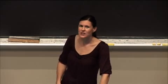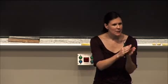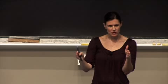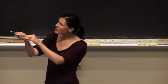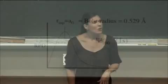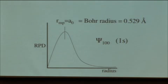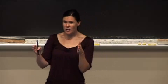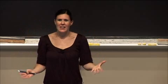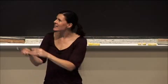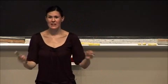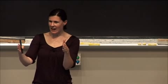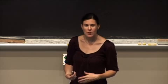If we're actually interested in how far away an electron is from the nucleus, instead of talking about probability density — which is a probability per volume — it would be much more useful to talk about something called radial probability distribution: the probability of finding the electron at some distance r from the nucleus in a spherical shell that is infinitesimally thin at a thickness dr.